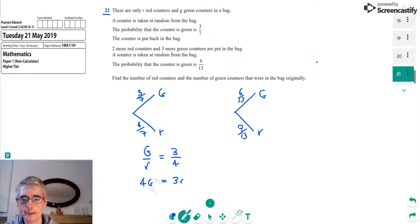That's an equation linking the greens and the reds. From the second equation, our second situation, the number of greens is now G, if that represents the initial number of greens, plus 3. And the number of reds has gone up by 2, so that's now R plus 2.